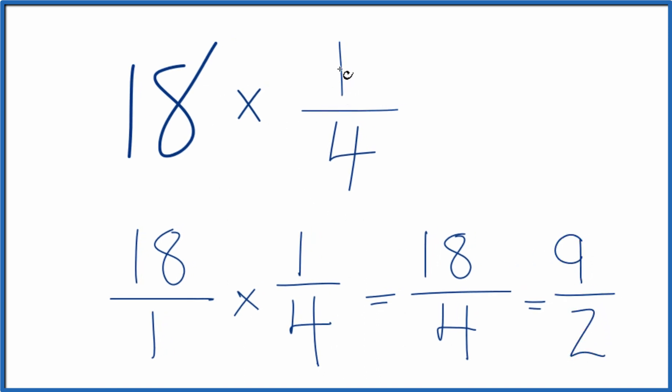So 18 times one-fourth equals 9 halves. This is an improper fraction because 9 is larger than 2. So we could change it to a mixed number.